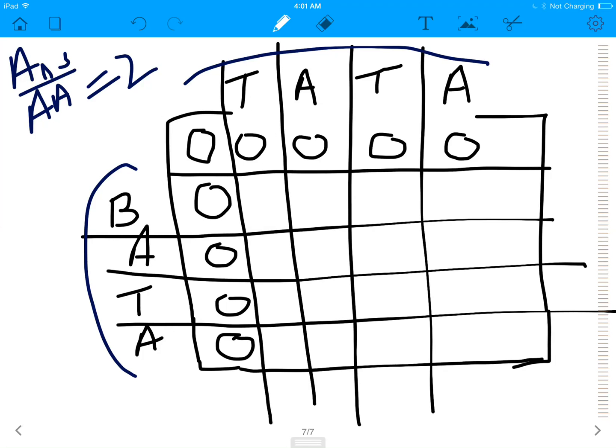So since bata is four letters and tata is four letters, we add a column and a row. So hence, we have a 5 by 5 matrix. So if the letters were 6 and 7, you would have a 7 by 8 matrix. If your letters were 8 and 10, you would have a 9 by 11 matrix. So let's start.